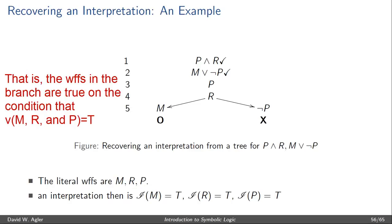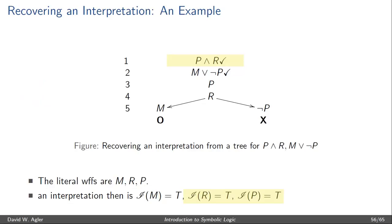Just to test this: if P was true and R was true, then the conjunction P and R would also be true, because a conjunction is true provided both of the conjuncts are true. We also have a disjunction M or not-P. A disjunction is true provided either one of the disjuncts is true, and if M is true, as the interpretation says, then the disjunction M or not-P is also true. So here we've assigned truth values to the propositional letters that would make all of the formulas in the completed open branch true.